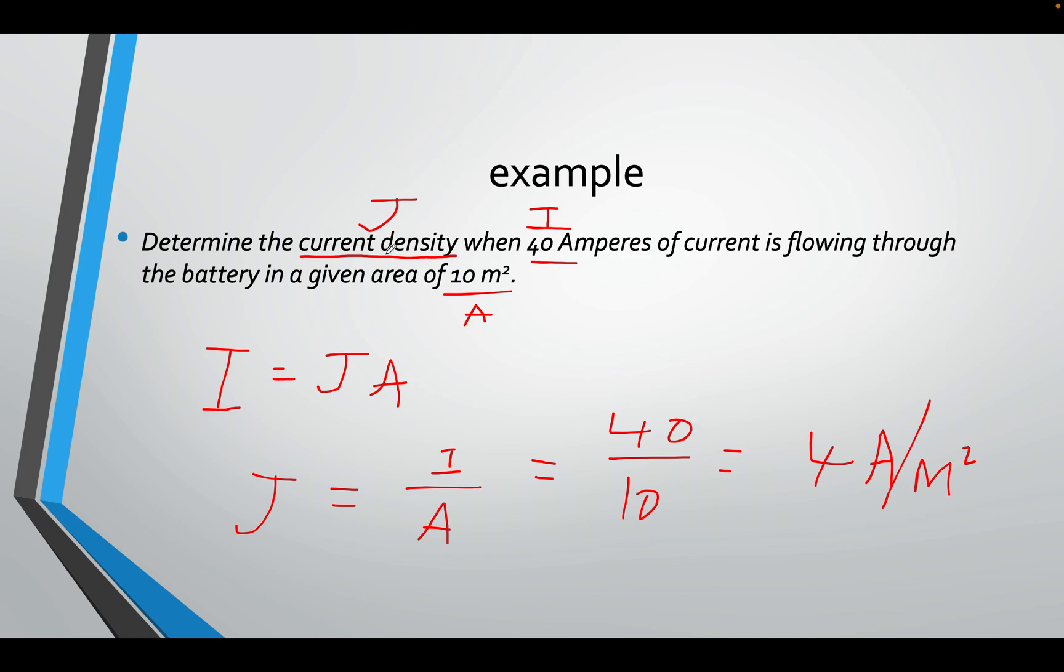Here is an example. Find the current density when 40 amps is flowing through the battery, given an area of 10 meters squared. Big area, just to keep it simple. I equals JA. We need to find the density, which is J. So, we'll rearrange this. J equals I over A. 40 over 10. Of course, 4 amps per meter squared.